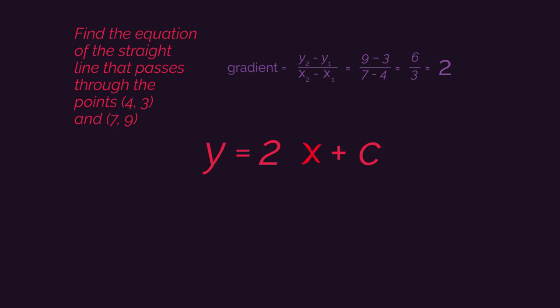To find the missing y-intercept c value, use one of the sets of coordinates that was given to us in the question. So 4,3 or 7,9. I'm going to use 4,3. So when x is 4, y is 3.